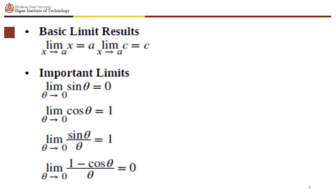The limit of sine theta over theta as theta approaches 0 is 1. The limit of 1 minus cosine theta over theta as theta approaches 0 is 0.